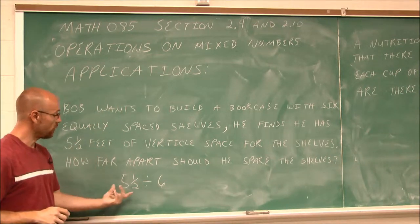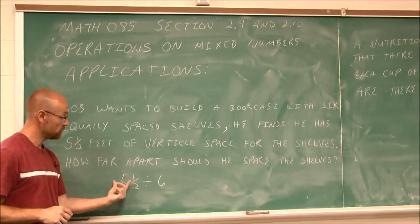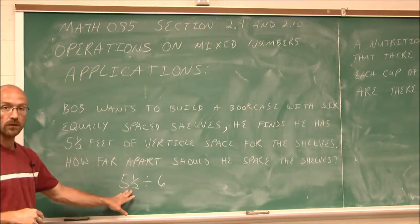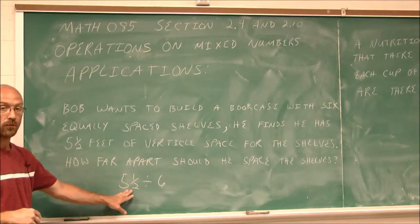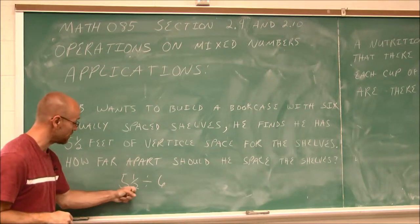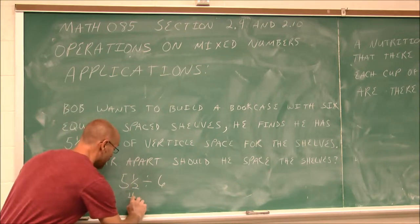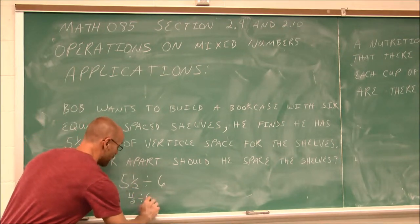Now, in order to work with mixed numbers and multiplication and division, we always convert this to an improper fraction. So I'm going to say 5 times 2 is 10 plus 1 is 11. 11 halves divided by 6.